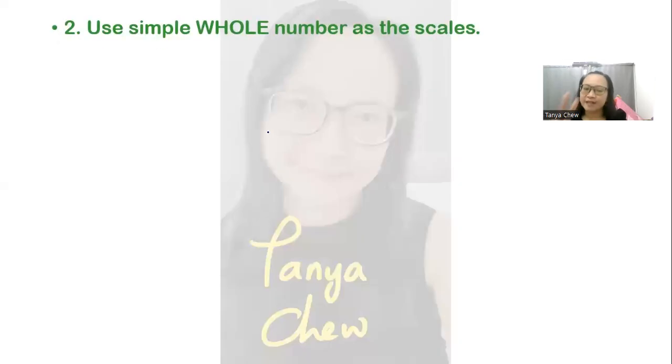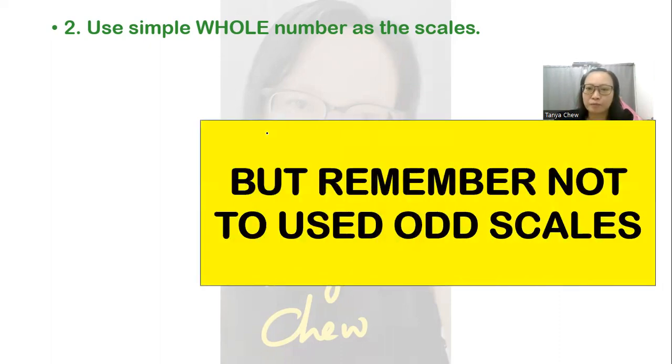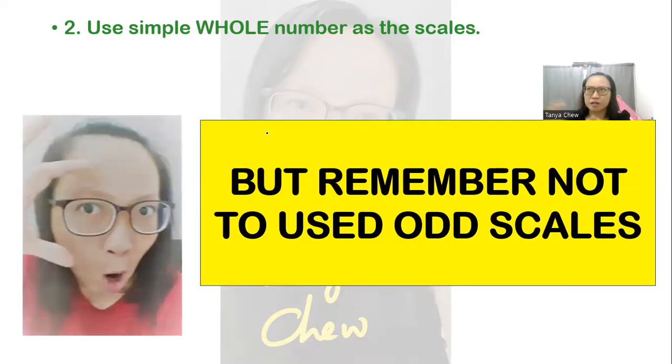Second point: use simple whole number as a scale because it saves you a lot of time. And do also remember, do not use odd scales. Because if you're using odd scales, is it very easy for you to determine one reading that you are supposed to plot? It is not easy. Odd scale that I meant was like the multiple of 11, the multiple of 7. These are very odd scales.